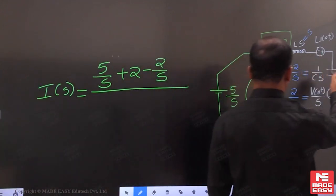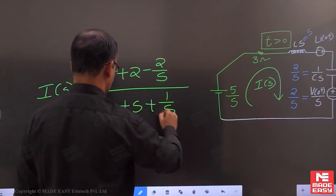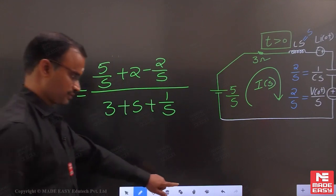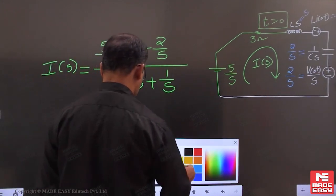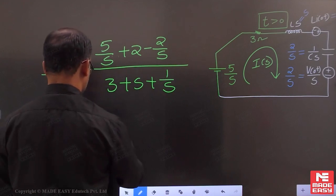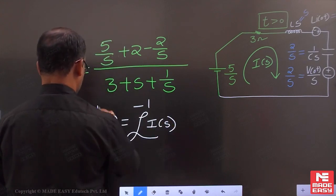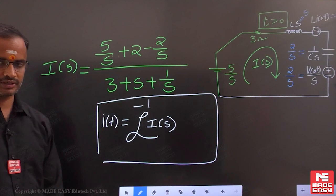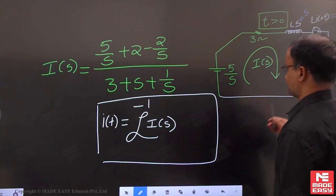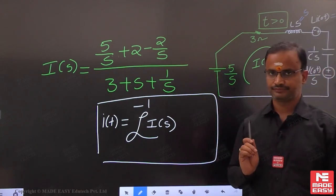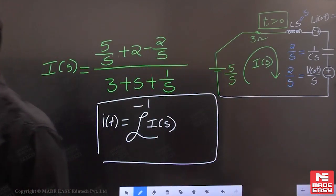The denominator consists of the resistor, inductor, and capacitor all connected in series. Simplify this current equation and apply the inverse Laplace transform. An important point: focus carefully on the polarities — if one polarity is wrong, the entire solution changes.